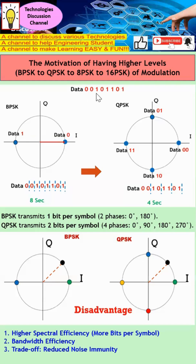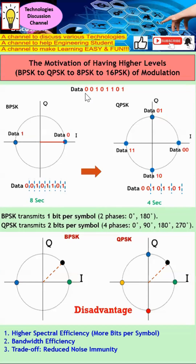Now imagine I have eight bits of data to send from transmitter to receiver. When the first data is zero, I will have a phase shift of zero. Imagine you are sitting in front of this constellation diagram — by looking at the location of the dot, you can tell the message is either one or zero. For example, when the message is zero, the dot appears here. The next message is still zero, so it appears in the same position. When the next bit is one, the dot appears at 180 degrees phase shift.